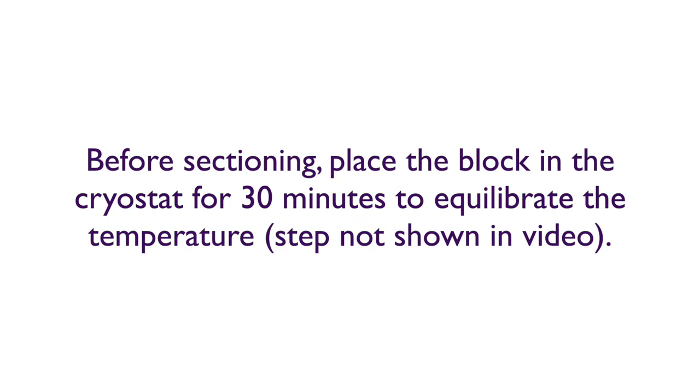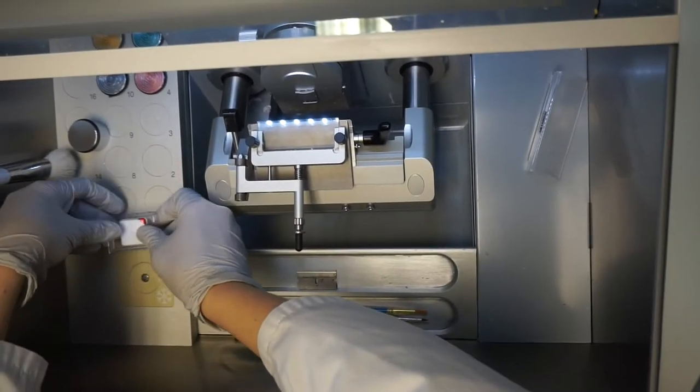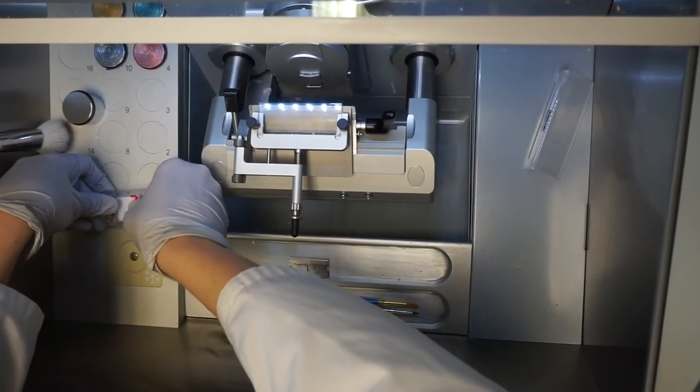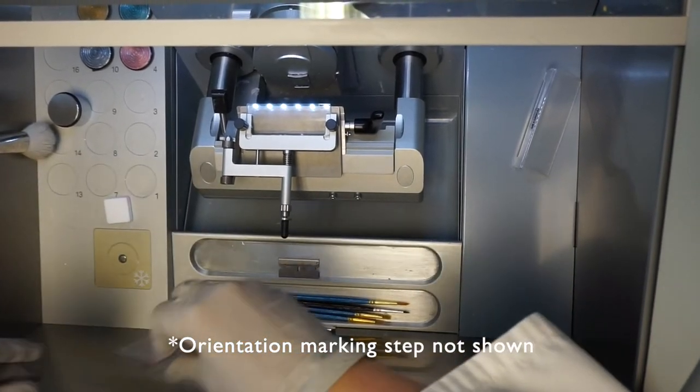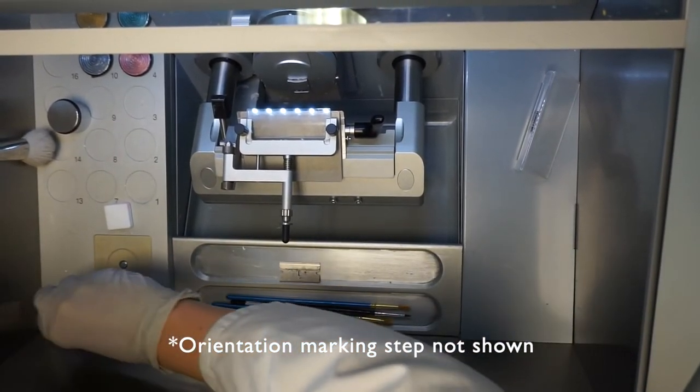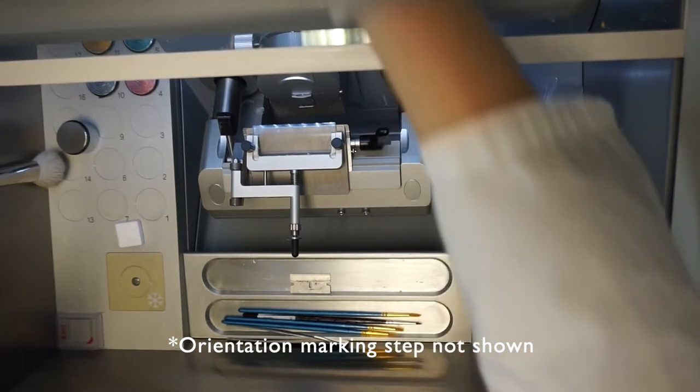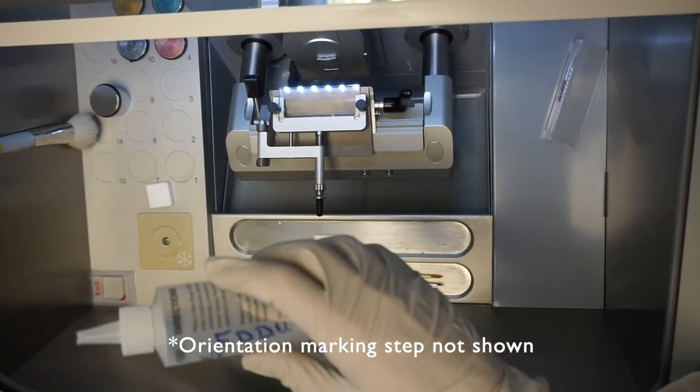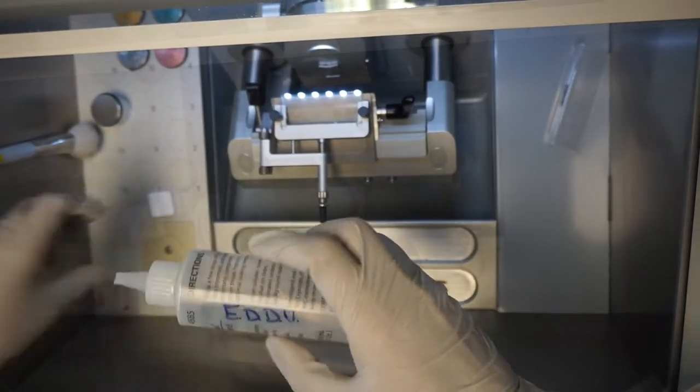Before sectioning, place the block in the cryostat for 30 minutes to equilibrate the temperature. Remove the block from the mould, always keeping track of the orientation. To help with this, mark the bottom side of the block by cutting an edge prior to removal, or make a mark using a permanent marker. Record the orientation of the mark in your lab notebook for further reference when analyzing the sections.